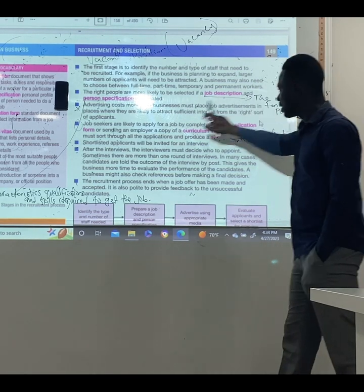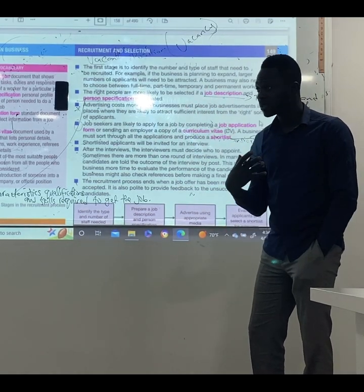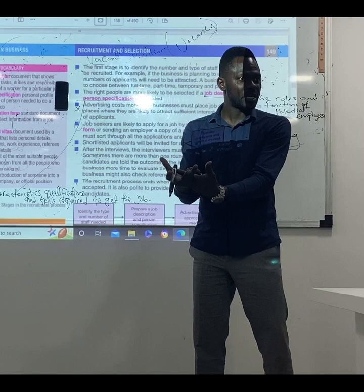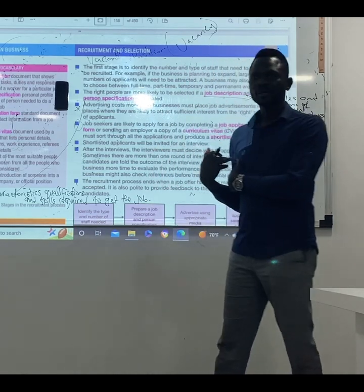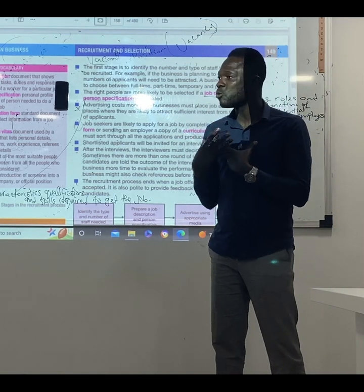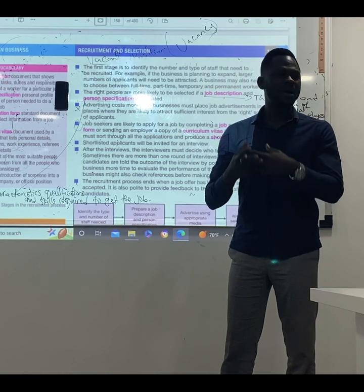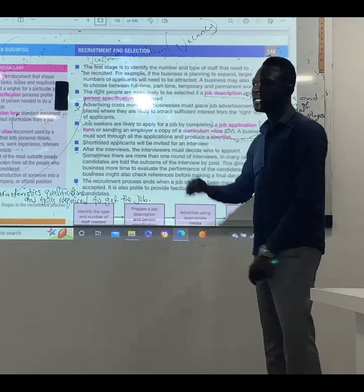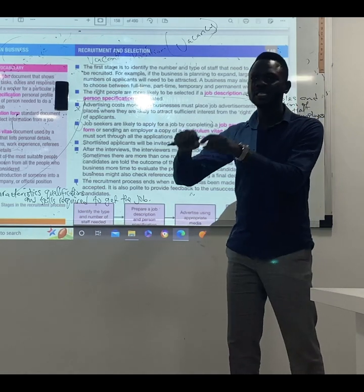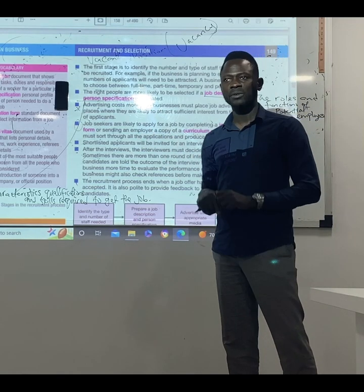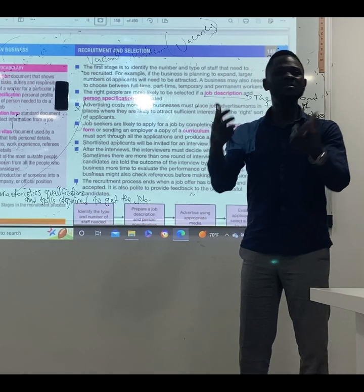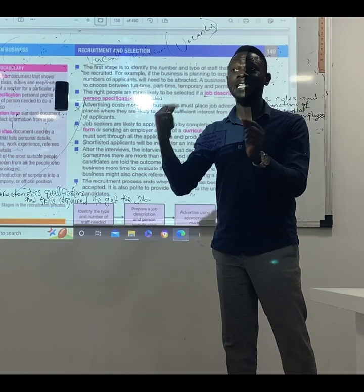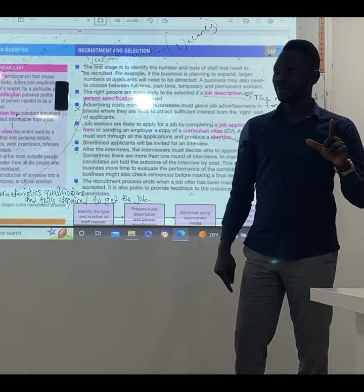After this stage, we're going to receive application forms. The application forms will come with a CV — curriculum vitae. If I'm going to apply for a job, I send an application attached to my CV, which talks about who I am, what I have, my credentials, my certificates. I attach it with the cover note — the application form — and send it to the company. The company then shortlists the most qualified candidates they believe are suitable. But that does not give you the job, because they are only seeing your CV, not seeing you in person.